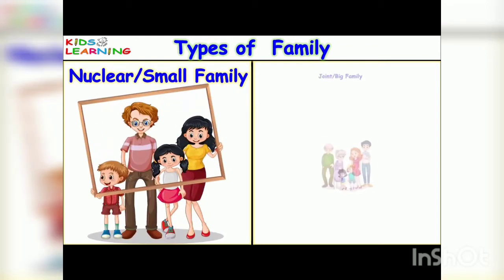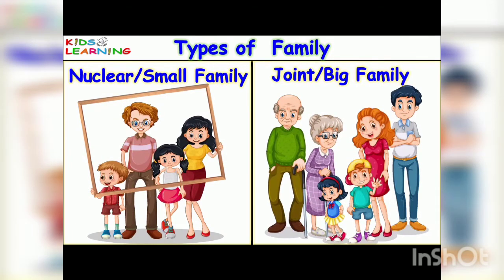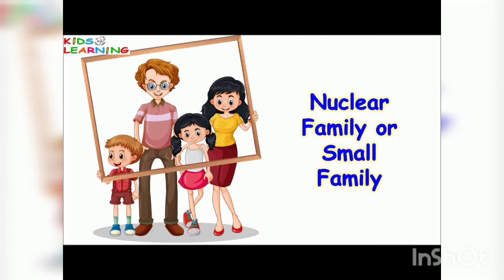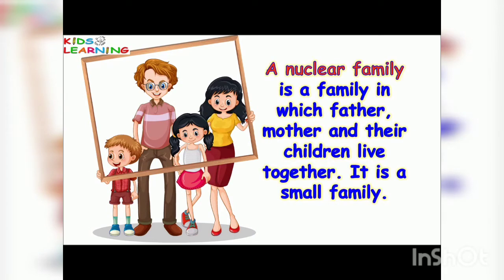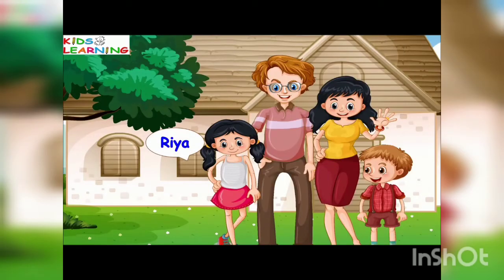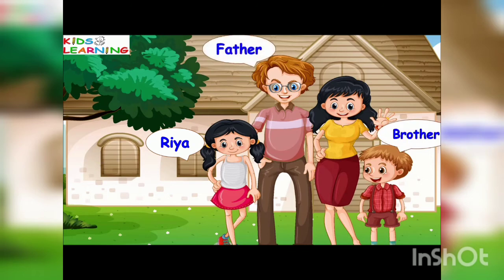There are mainly two types of family: nuclear or small family, and joint or big family. A nuclear family is a family in which father, mother, and their children live together — it is a small family. For example, this is Ria. She lives with her brother, father, and mother, so her family is a nuclear family.